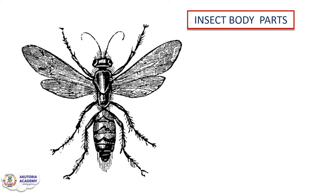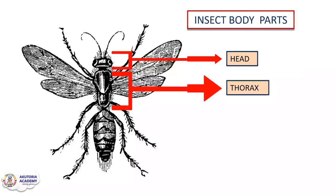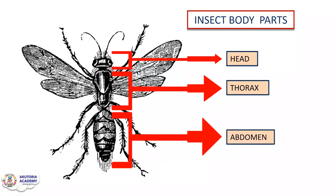Insect body parts are divided into three. The first part is called the head. The head comprises where you can find the antennas, the eyes, and other head structures. We also have the thorax. The thorax is where most times the wings are joined to the body — it is like the middle part of the insect. We also have the abdomen, which is towards the tail end of the insect, and is where most insects excrete from or where most of their metabolic processes happen.